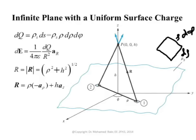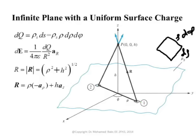We can say that dE, the contribution, is (1 over 4π ε₀) times dQ over R² times â_R. R is the distance between that infinitesimal surface element and my observation point. If my source element has a radius of Ru from the origin and the observation point has a height of h, then this distance is the square root of Ru² plus h².